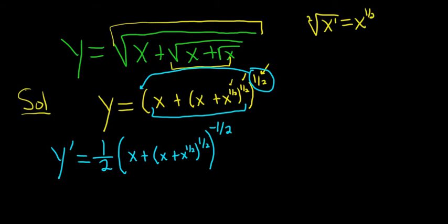So all we've done is we've taken the derivative of the outside. Now we have to multiply by the derivative of the inside. So the derivative of x is 1 plus, and then now we have to take this derivative. So we have to use the chain rule again. So we'll put the 1 half in the front, leave the inside untouched. 1 half minus 1 is negative 1 half, times the derivative of the inside.